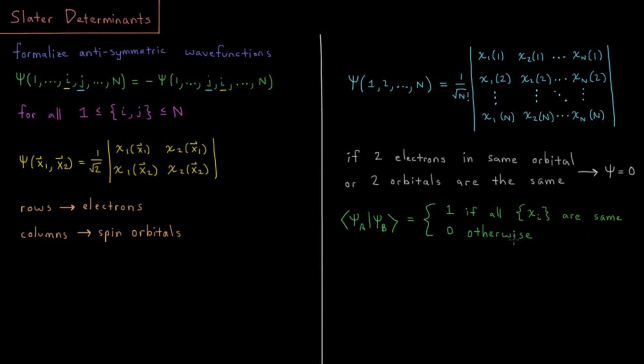And zero otherwise. In order for there to be a non-zero overlap between two electronic wave functions, all of the orbitals there have to be the same, otherwise the result is going to be zero.